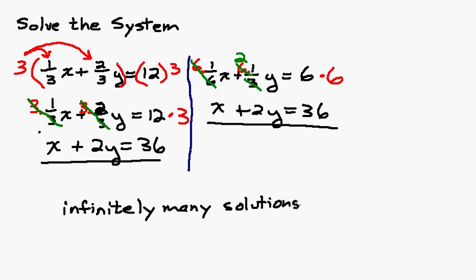But if you want to write it out in set builder notation, it's the set of all points x and y such that x plus 2y equals 36. What this is basically saying is the solution to this system is any point x and y that makes the equation x plus 2y equals 36 true.